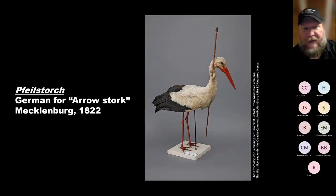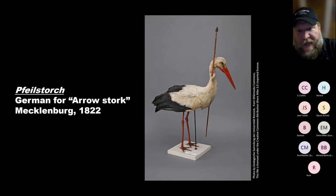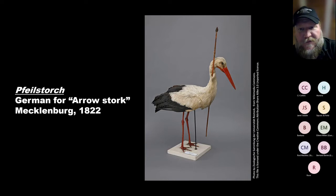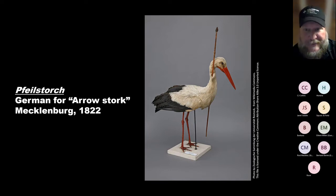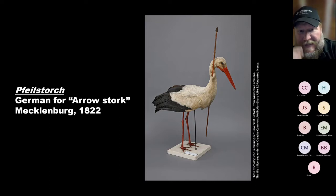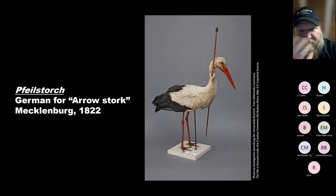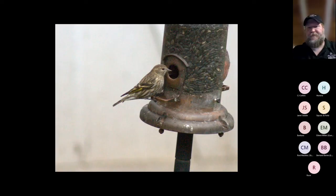This is a Pfeilstorch — German for 'arrow stork.' It had a spear in it from Africa, and that was one of the first really connecting thoughts for people — okay, this bird didn't disappear or go to sleep, it went somewhere else, in this case Africa, and came back with a spear in its neck. There are like 19 different instances where these have been found, providing evidence that birds were going somewhere else during winter.